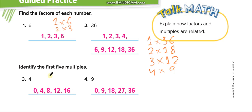Here we are writing the multiples — not the factors, these are different. Multiples always start with zero. For 4: 4×0, 4×1, 4×2, 4×3, 4×4. For 9: 9×0, 9×1, 9×2, 9×3, and 9×4.